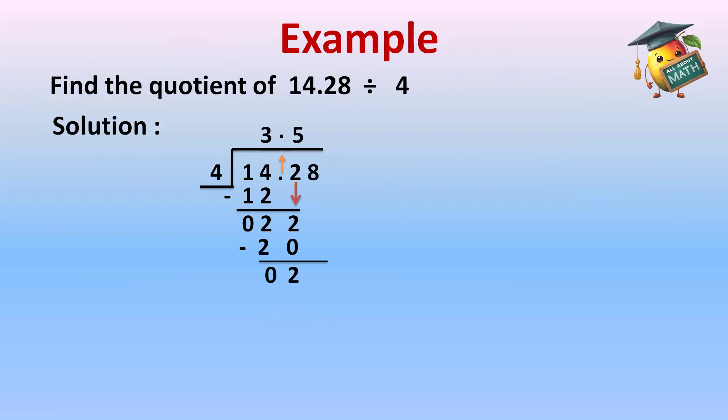Now, 8 will come down. 4 into 7 is 28. 8, and then subtraction: 28 minus 28 is 0.